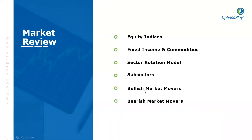Our agenda for today, as usual, we'll be starting off with the major indices. We are seeing a bit of consolidation at current levels, not the strong rebounds that we have been used to over the last couple of years. From there, we'll be moving on to fixed income and commodities — a bit of a breakout in yields leading to bonds declining, and oil continuing its steady rise. We'll also look at the sector rotational model, two sub-sectors of interest, and end with bullish and bearish market observations.